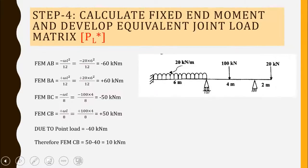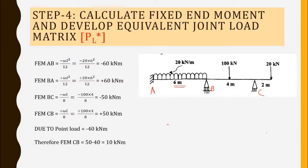The fourth step is to calculate fixed end moments and develop the equivalent joint load matrix. For the UDL between A and B — which is 20 kN/m over a length of 6 meters — we use the equation FEM = ±wL²/12. At end A it is minus wL²/12 and at end B it is plus wL²/12, both giving a value of 60 kN·m.